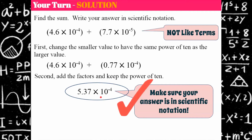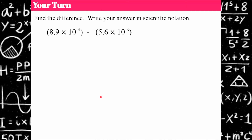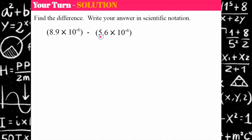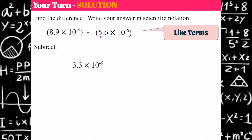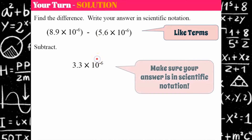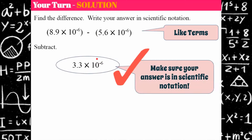Your turn — the same rules apply for subtraction. Go ahead and find the difference, then come back. Welcome back. Since I'm subtracting, I need to make sure the powers of 10 are the same — and they are. So I keep the power of 10 and just subtract the factors: 8.9 minus 5.6 is 3.3, and we keep the power of 10. It's in scientific notation, so I'm done.